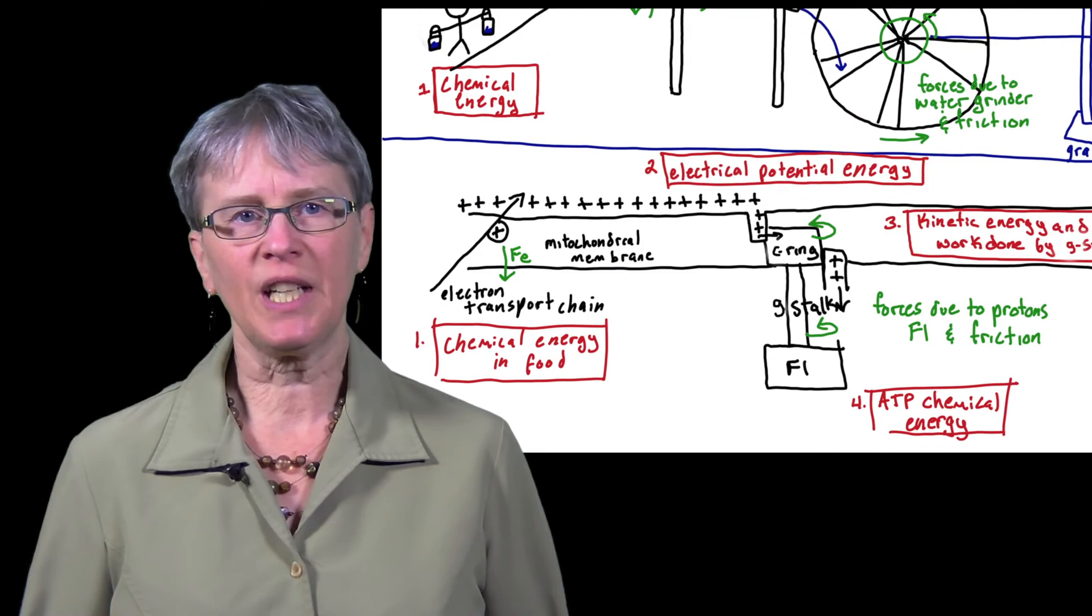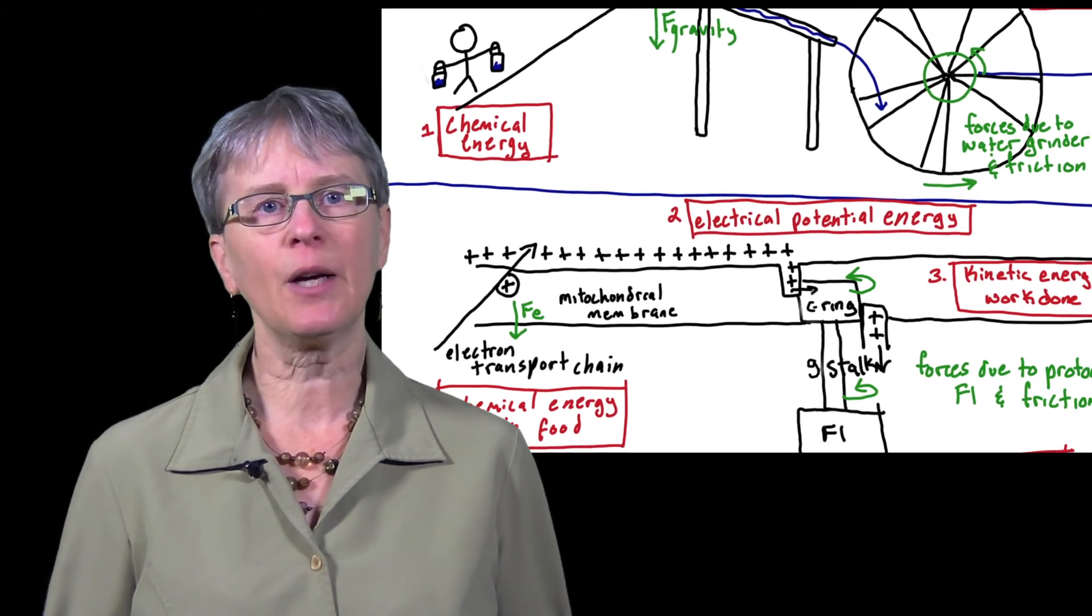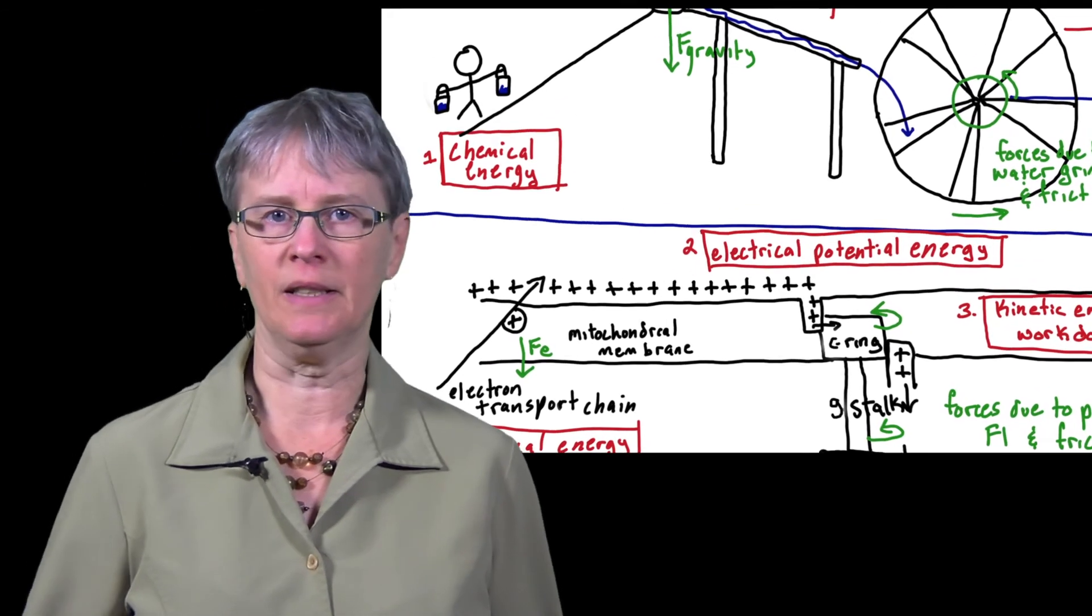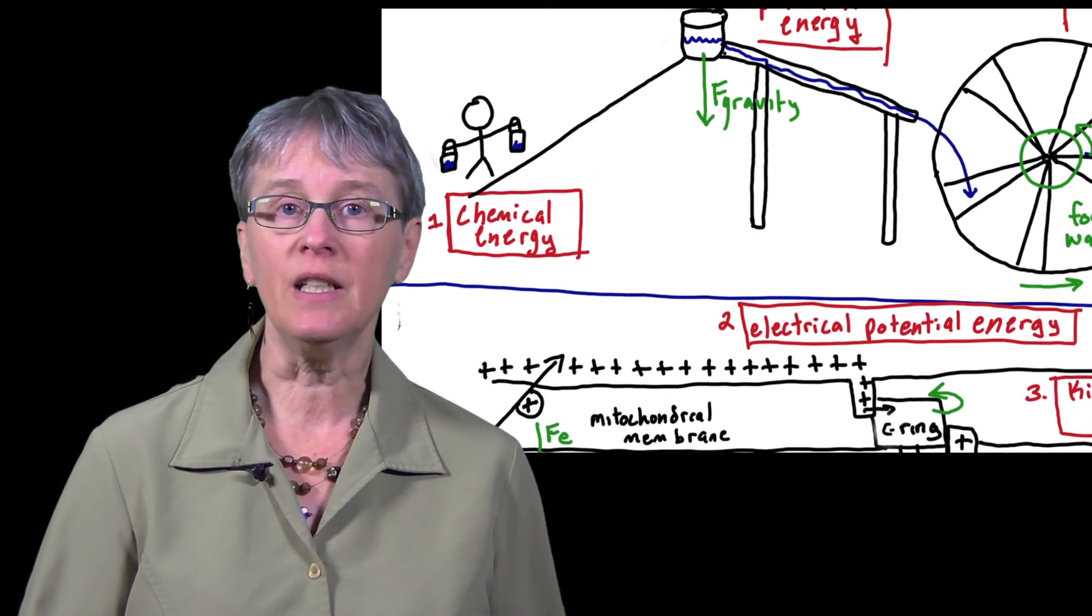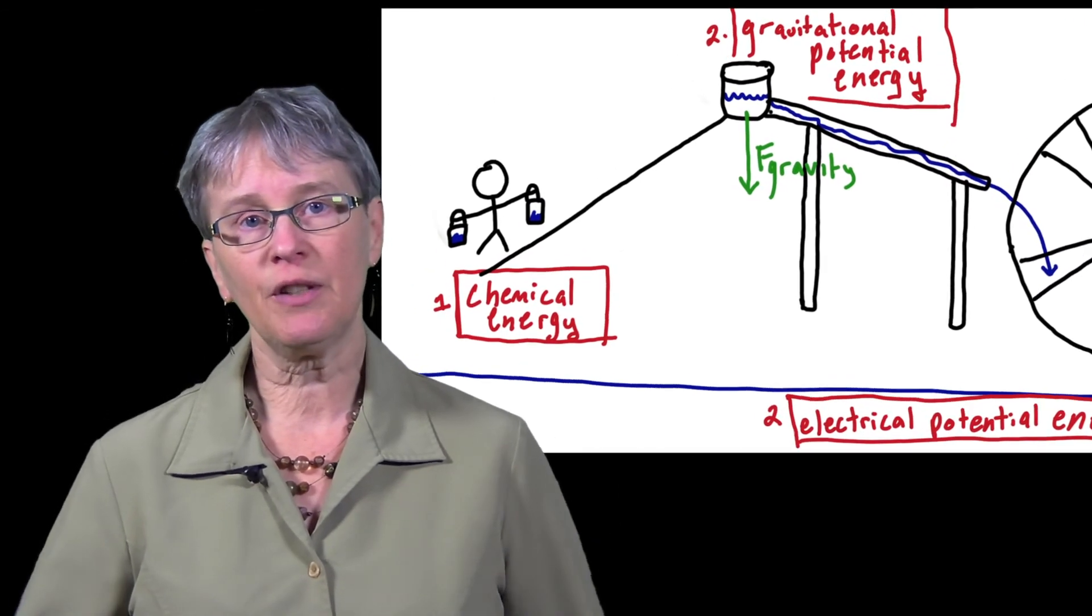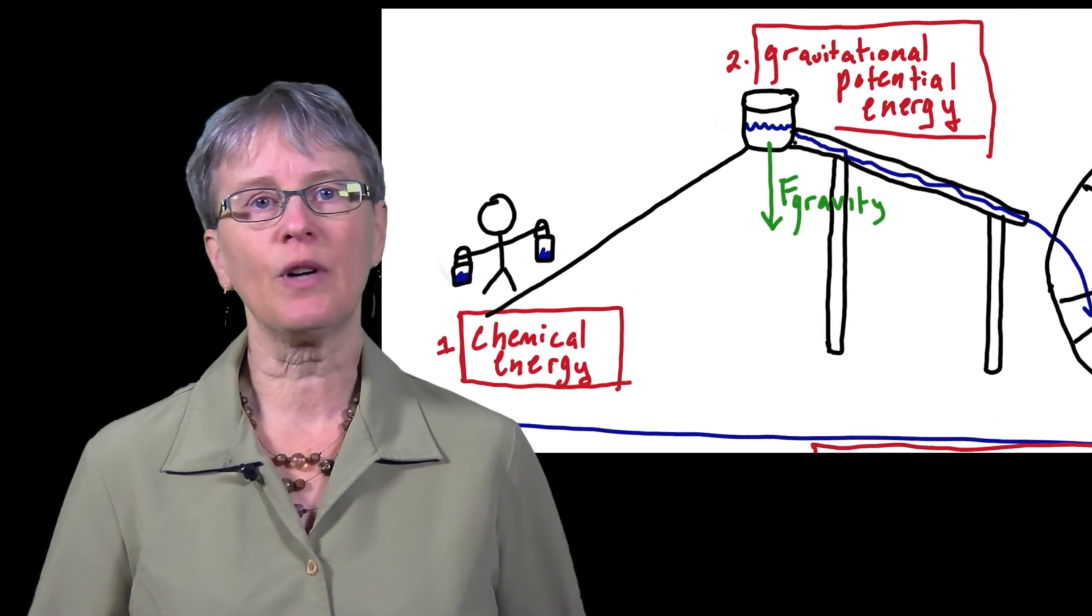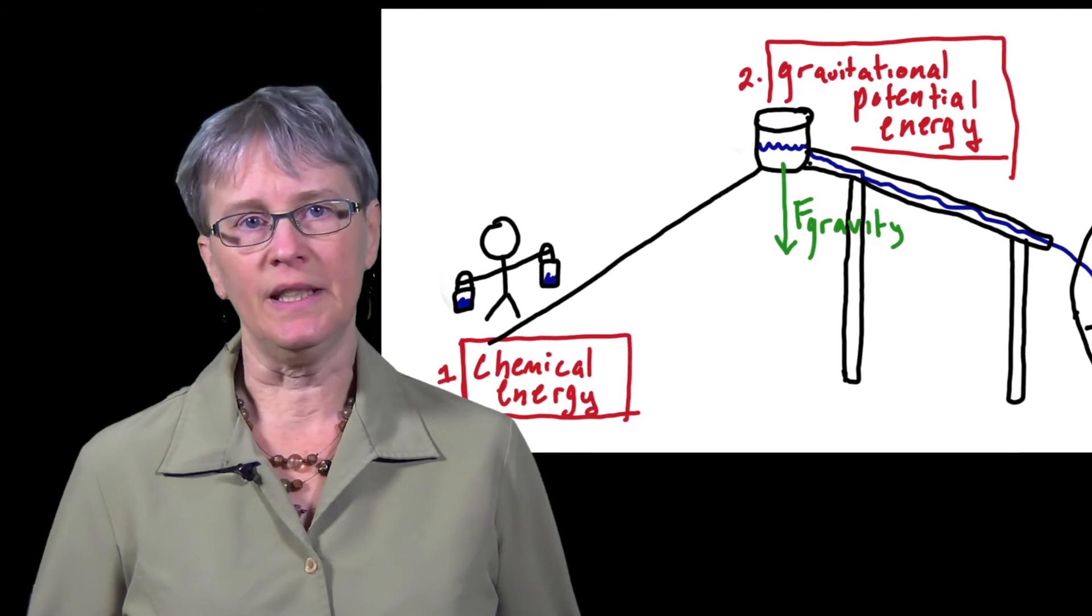To make this more understandable, we can draw an analogy with a water wheel. The electron transport chain is like a person carrying buckets of water up a hill. Because the water experiences a downward force due to gravity, moving it upwards takes energy. So the chemical energy of the person is converted into gravitational potential energy of the water. Next, the water is released.